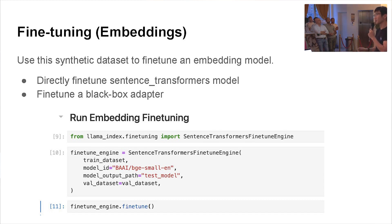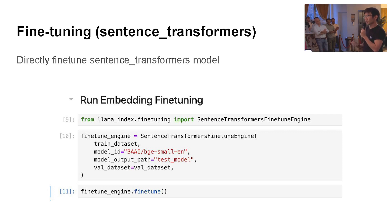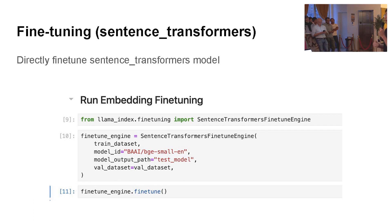The other option is if you're using an embedding model that's not sentence transformers, you can fine-tune a black box adapter. One caveat: you can only really fine-tune sentence transformers because it's an open model that exposes gradients. With something like OpenAI embeddings, it's a black box model so you can't fine-tune it. The other issue is that once you fine-tune embeddings, you have to re-index and re-embed all your documents — which is intractable if your corpus is large, like a billion documents. That's going to be very expensive and slow.